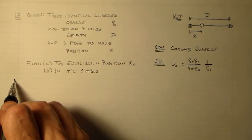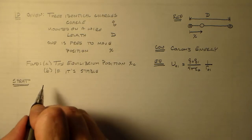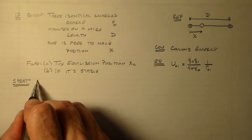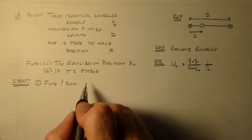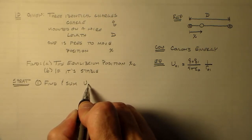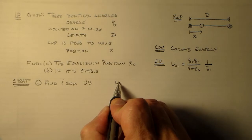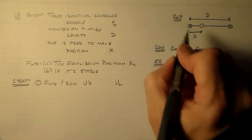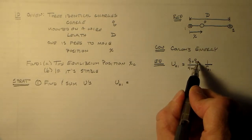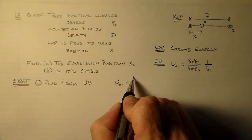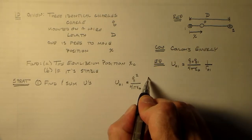So what we need is a strat, right? We need a strategy. So we want to first find and sum the U's. So U 0,1, for example, if we call this 1, this 0, and this 2, U0,1 is Q0 times Q1, which is Q squared over 4 pi epsilon naught. And the distance between these two guys is just 1 over x.